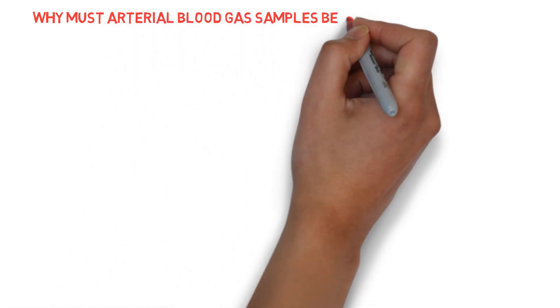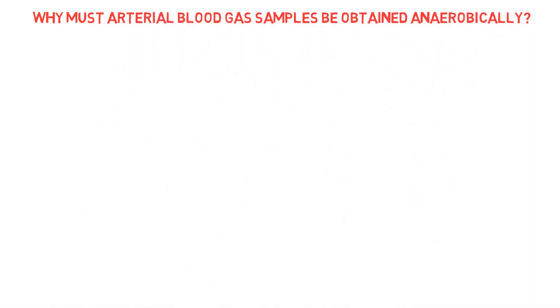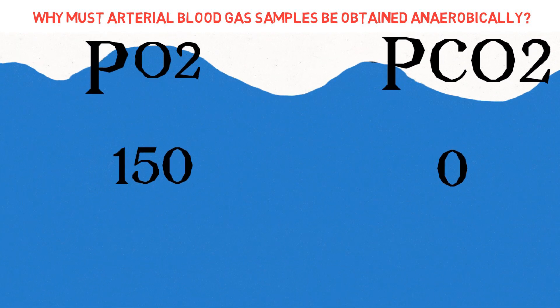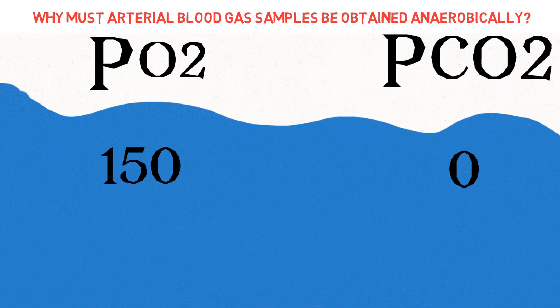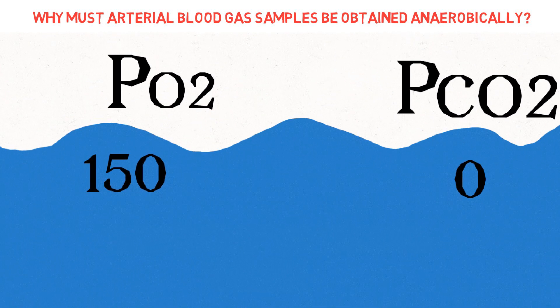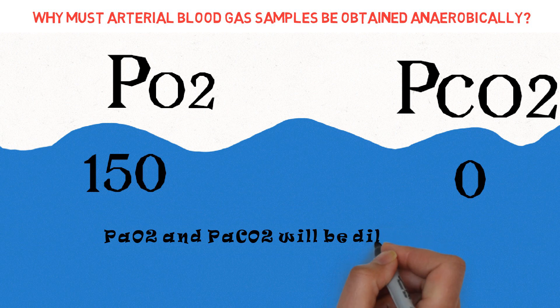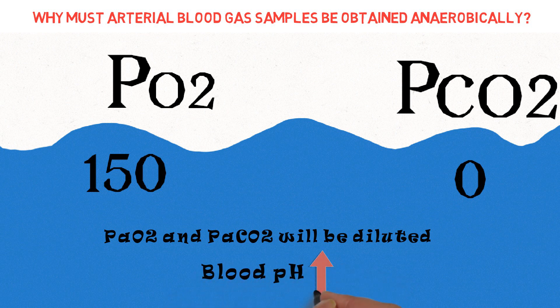Why must arterial blood gas samples be obtained anaerobically? A common pre-analytic error related to blood gases is contamination of the sample with room air. At sea level, air has a PO2 of about 150 mmHg and a PCO2 of about 0 mmHg. Thus, if the sample is contaminated with air, the measured PO2 of the sample increases if the true value is less than 150 mmHg and decreases if the true value is more than 150 mmHg. Contamination of the sample with air lowers the PCO2 of the sample, with the result of increasing pH.